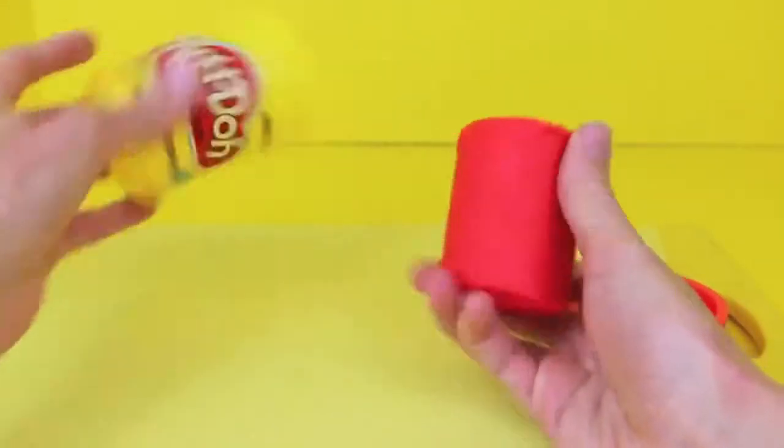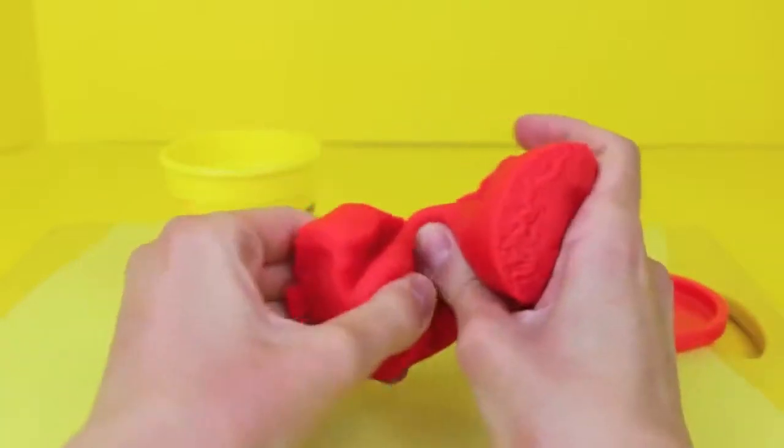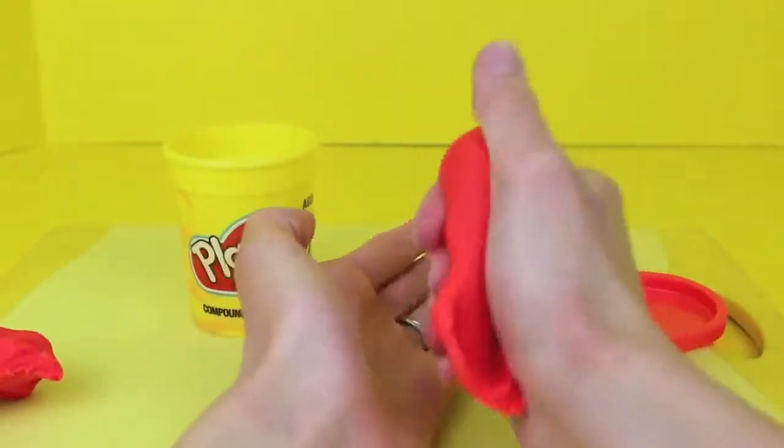To start I'm going to use red Play-Doh to make the hot dog piece. I even have a brand new can of Play-Doh. Yay! Nice and fresh.